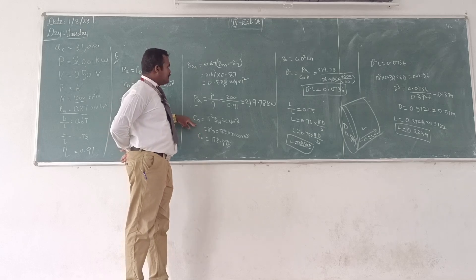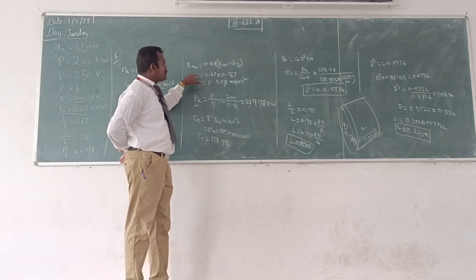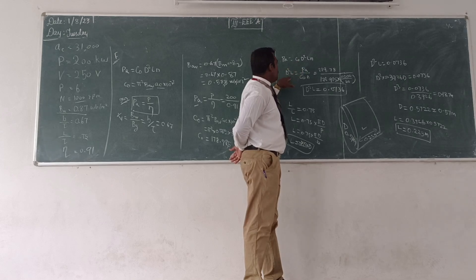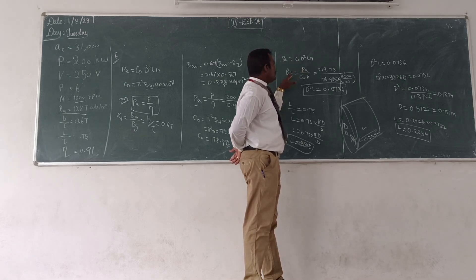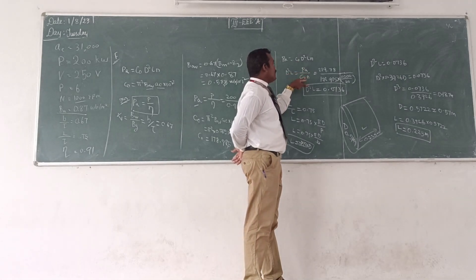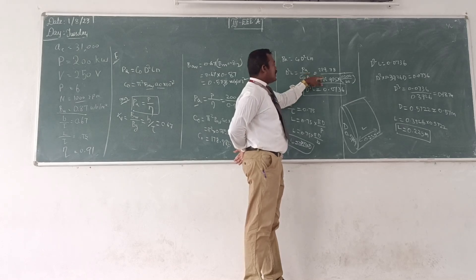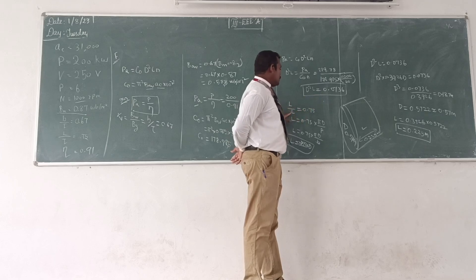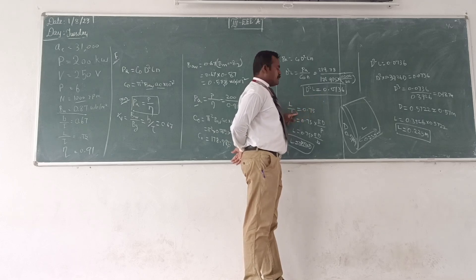Once you have found these two values — PA as well as C0 — from that you can obtain D²L from the expression: D²L = PA divided by C0 into N. You can substitute all the values and find the D²L value. Then the L/τ value is given as 0.75, from which we can calculate L in terms of D.